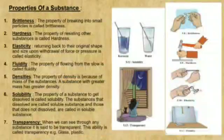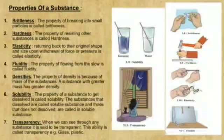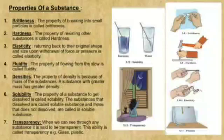Now let's understand properties of a substance. The first one is brittleness. What will happen if pressure is applied on a substance like chalk, brick, alum, or glass? These substances will break into small pieces or particles. The substances are said to be brittle. This property of substance is called brittleness.